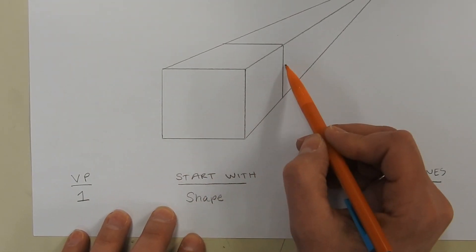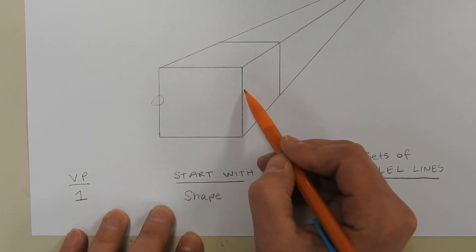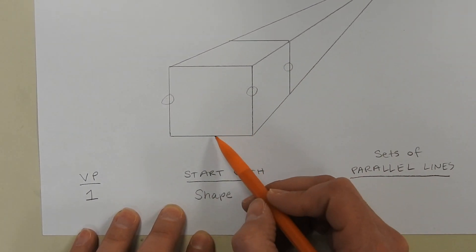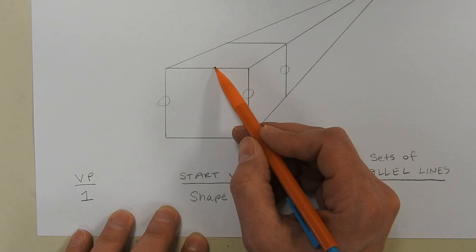So this right here is one set of parallel lines: one, two, three. There's a set here, one, two, three.